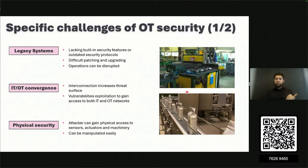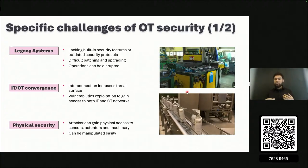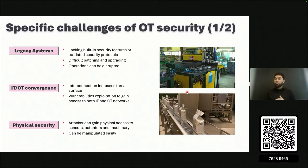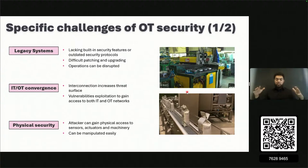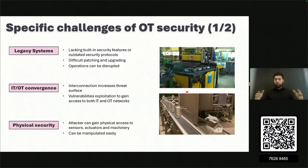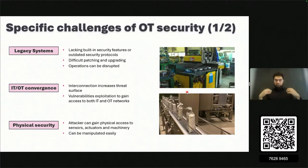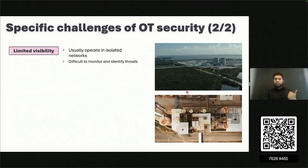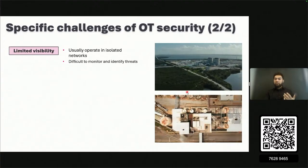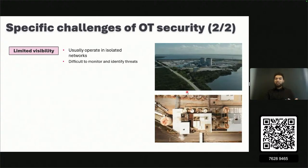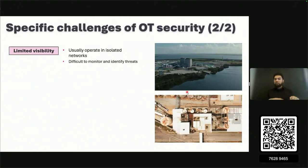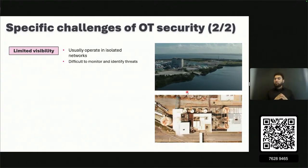Third is physical security: these machines are in places where people are physically working in close proximity, so there is a huge emphasis on physical security — access to the facility should be properly guarded. If someone reaches the machine itself and knows how to manipulate it, that's a very high security risk. Fourth is limited visibility: factories operate in isolated networks and are sometimes physically isolated in separate zones, making it really difficult to monitor OT systems and identify threats.